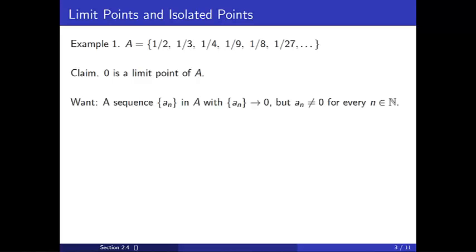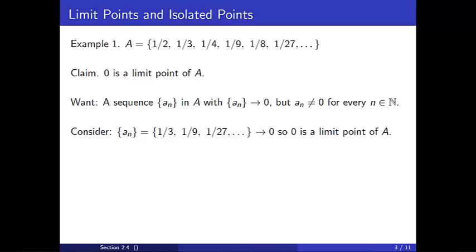To verify 0 is a limit point of A, we must find a sequence of points in A which converges to 0, but none of the points of our sequence can be 0. What about the sequence 1/3, 1/9, 1/27, and so on? Certainly this sequence converges to 0, and 0 isn't a term of the sequence. Hence, we've shown 0 is a limit point of A.